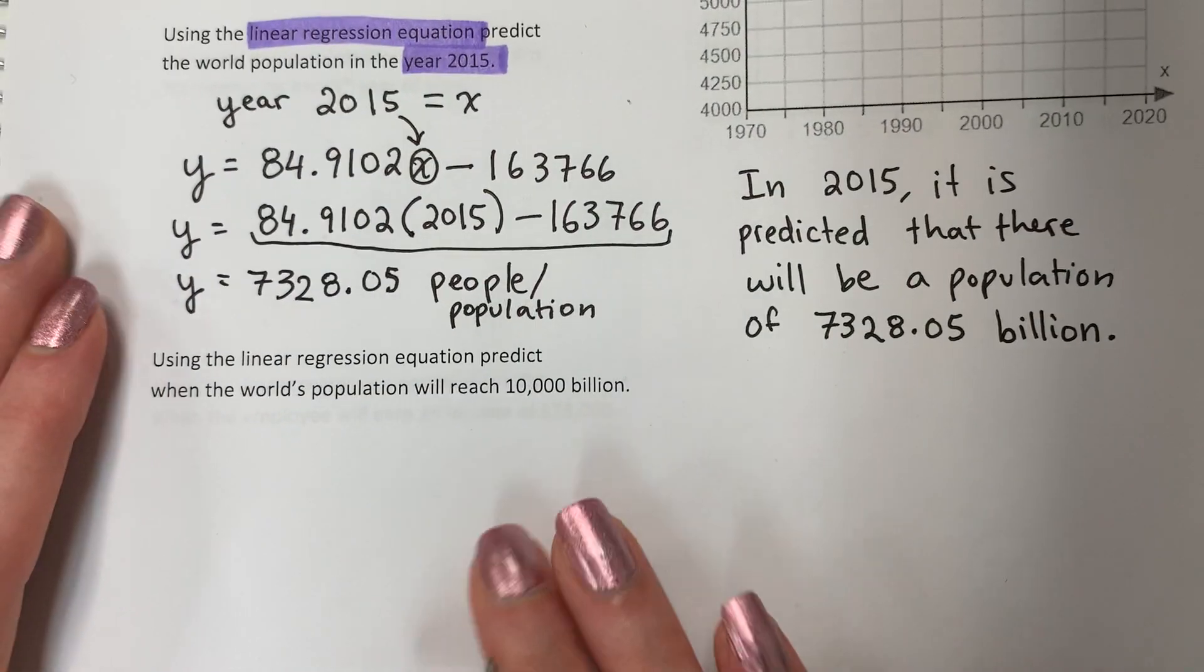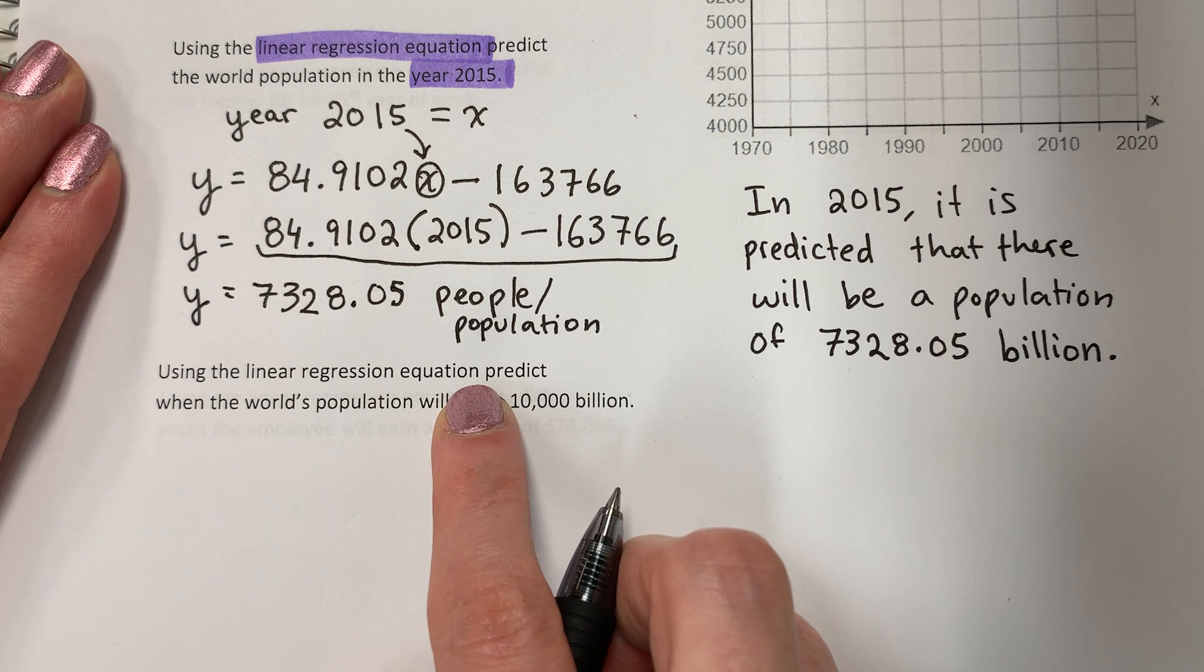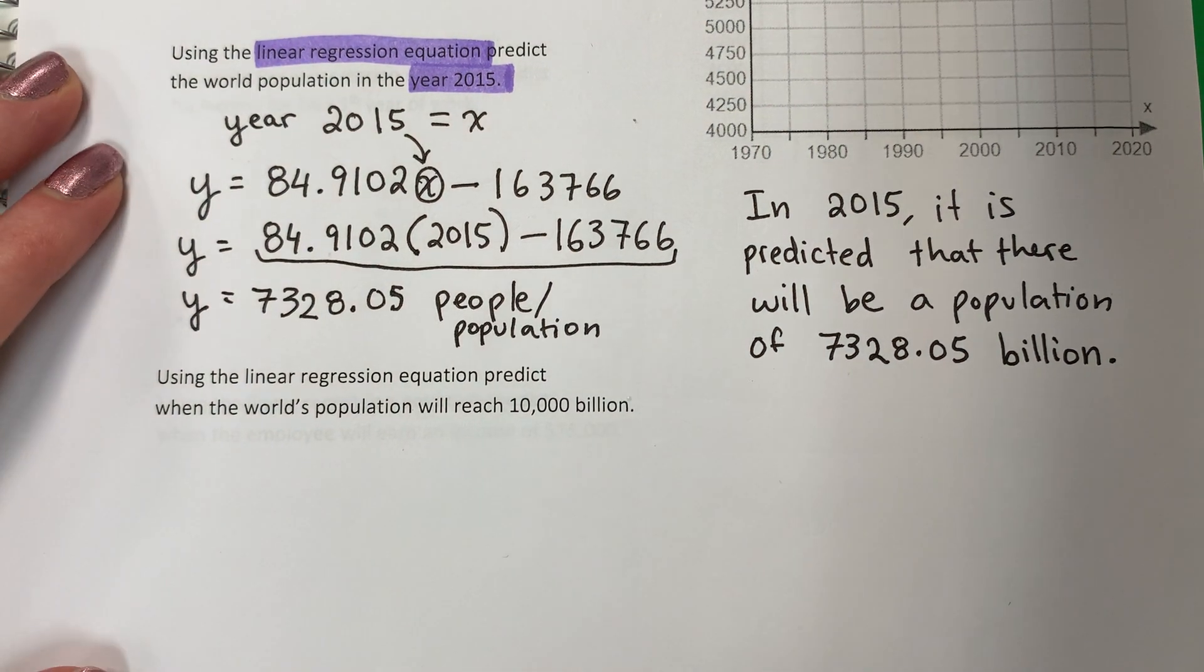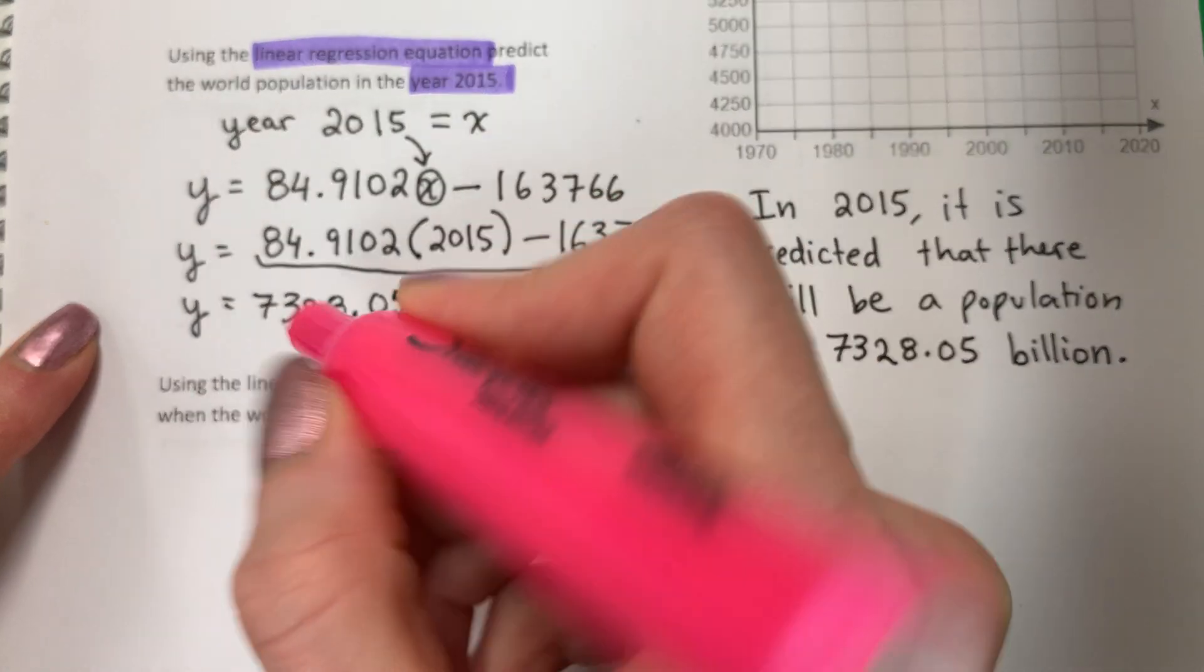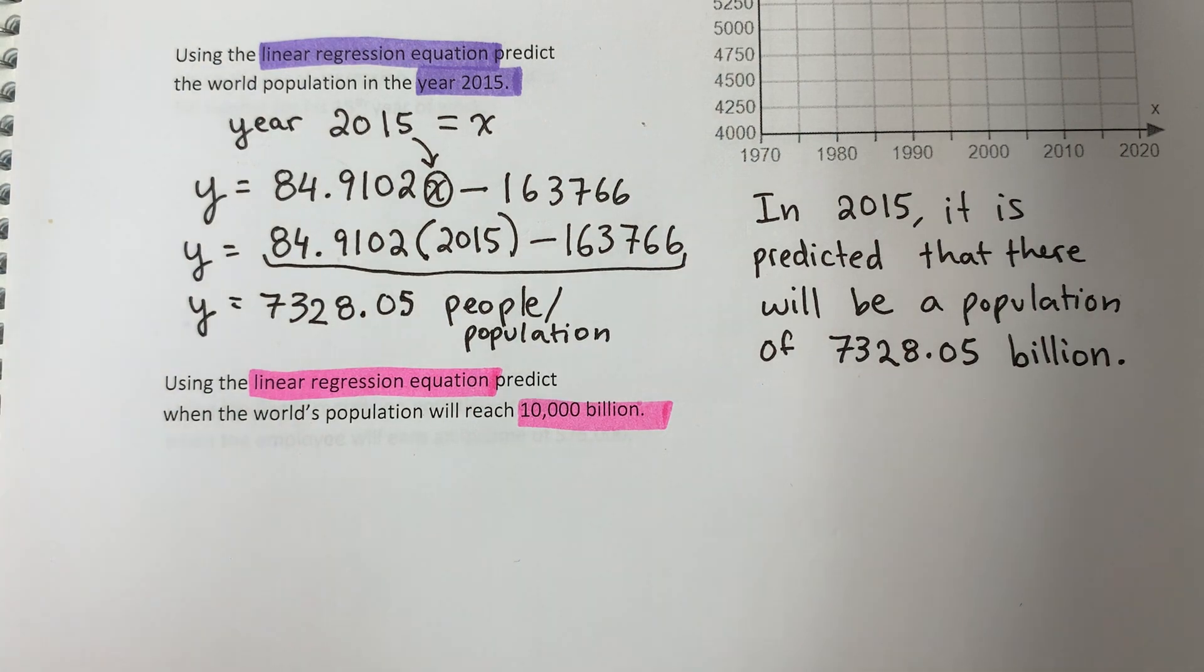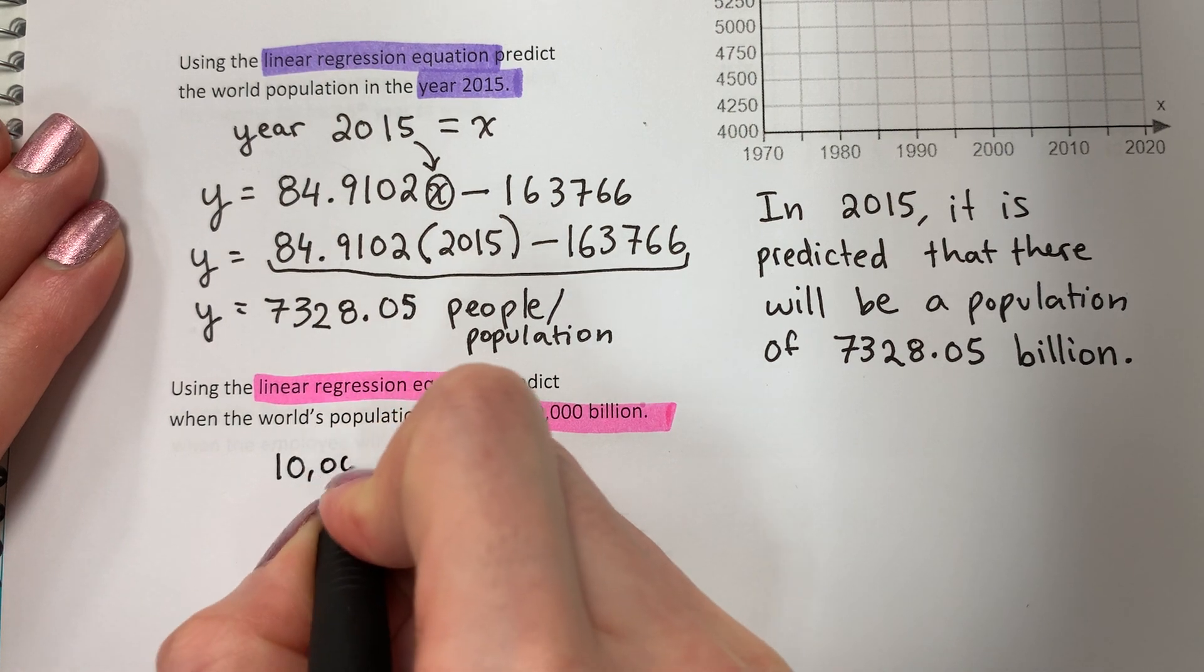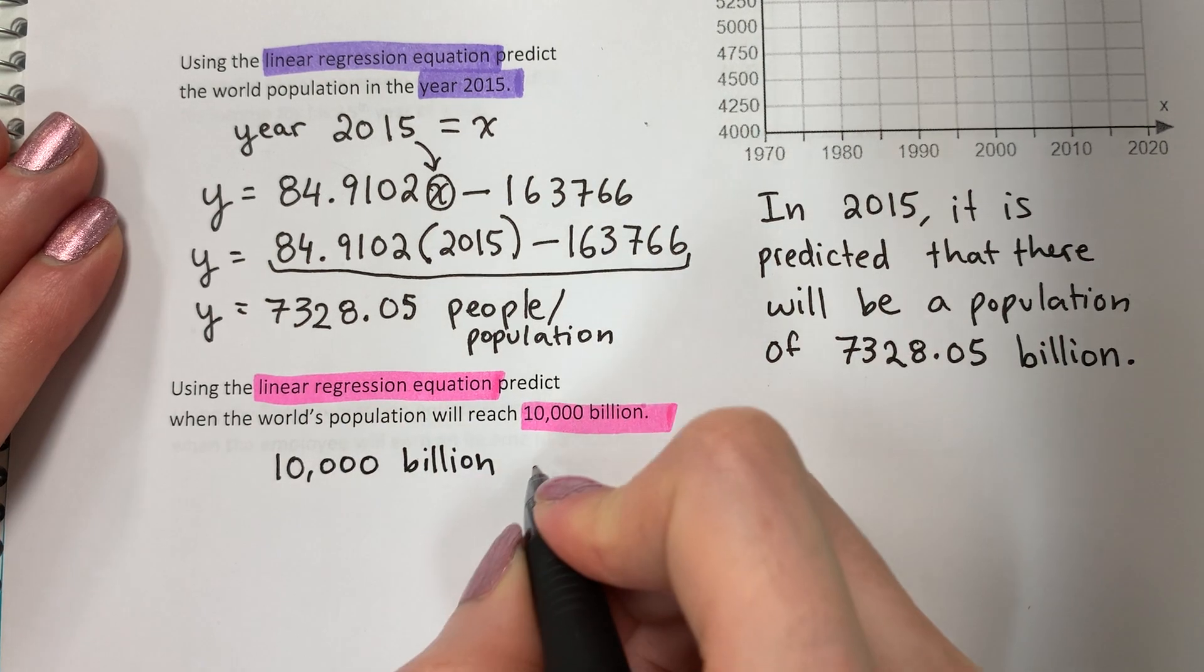Let's go ahead and do our next one. Using the linear regression equation, predict when the world's population will reach 10,000 billion people. So again, I need to use my equation. Necesito usar mi equación. And 10,000 billion people. So I have 10,000 billion. And what is that? ¿Qué es eso? It's the population. Es el populación.